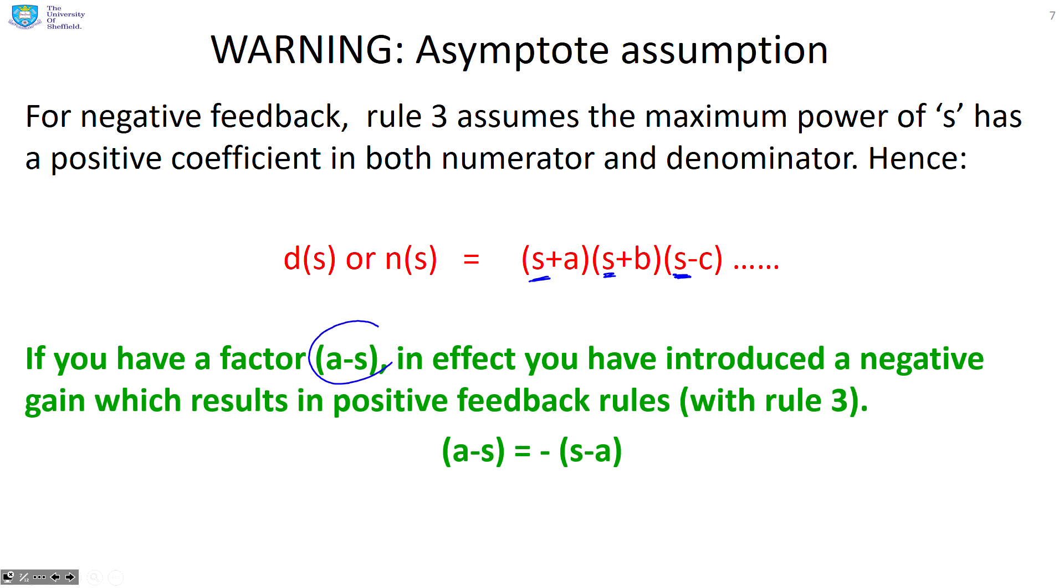Now, if the maximum power of s has a negative coefficient, which can happen if you include a factor like this, then implicitly the rules that you're using have to go from negative feedback to positive feedback because of this identity here.